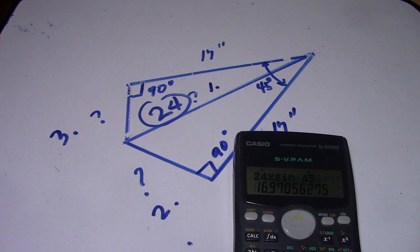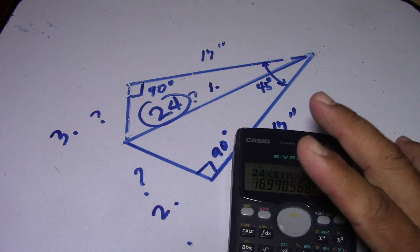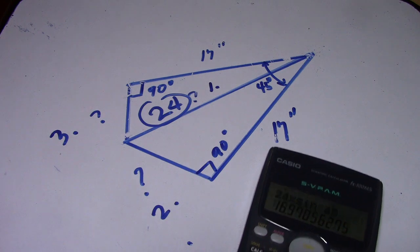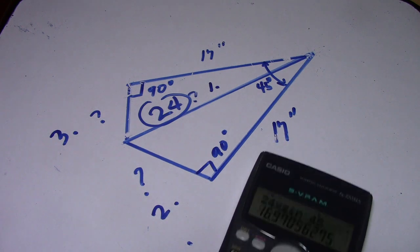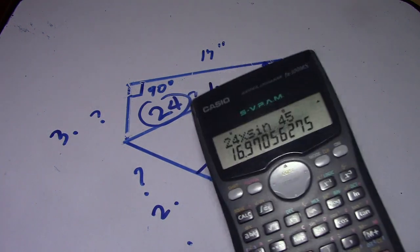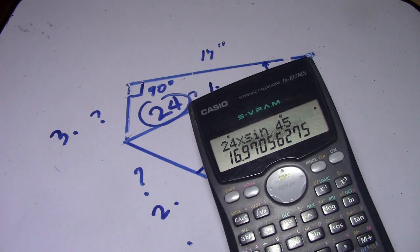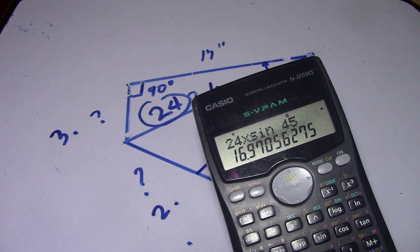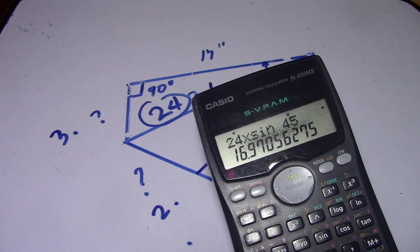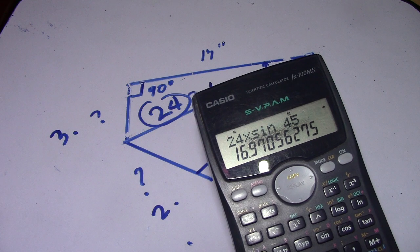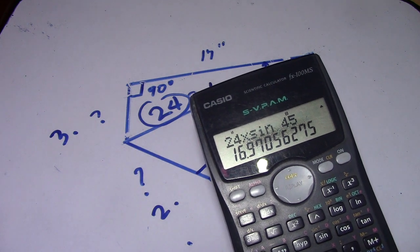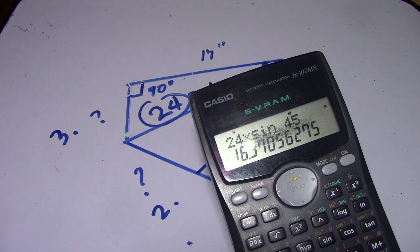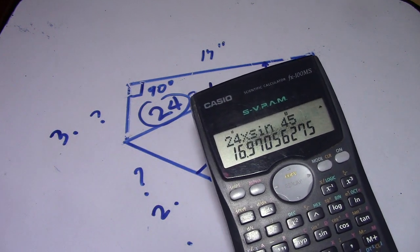And we have now an answer: 16.9. This is our answer for number two — 16.9. We round this off, so the answer is 17. Number two is 17.